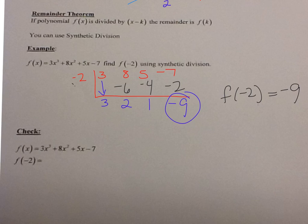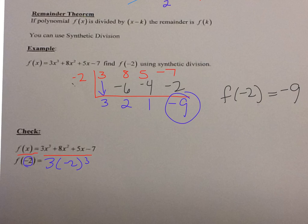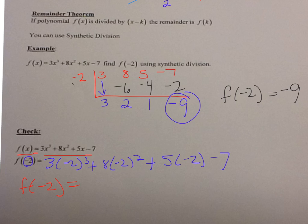Now let's check it the old school way — by plugging in x equals negative 2 directly. f of x equals 3x cubed plus 8x squared plus 5x minus 7. So f of negative 2 equals 3 times negative 2 cubed plus 8 times negative 2 squared plus 5 times negative 2 minus 7. Plug the whole thing in your calculator and you get f of negative 2 equals negative 9 — the same exact answer. So f of whatever number is out here gives you your remainder.